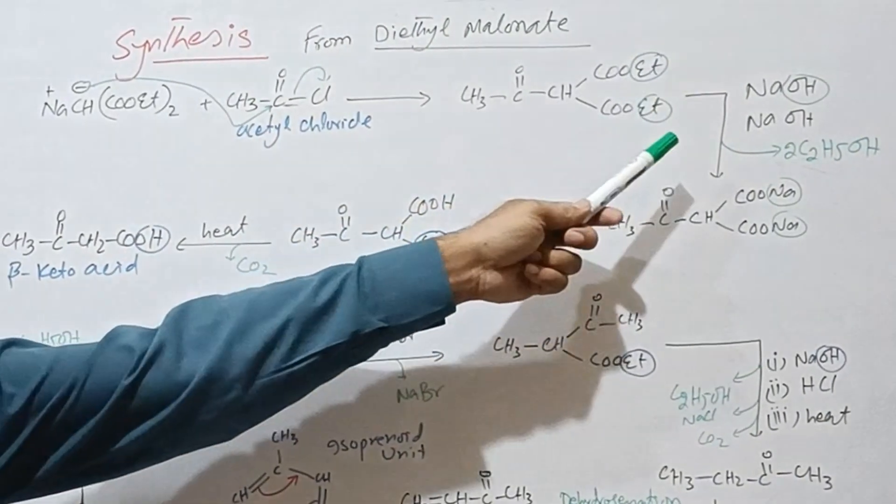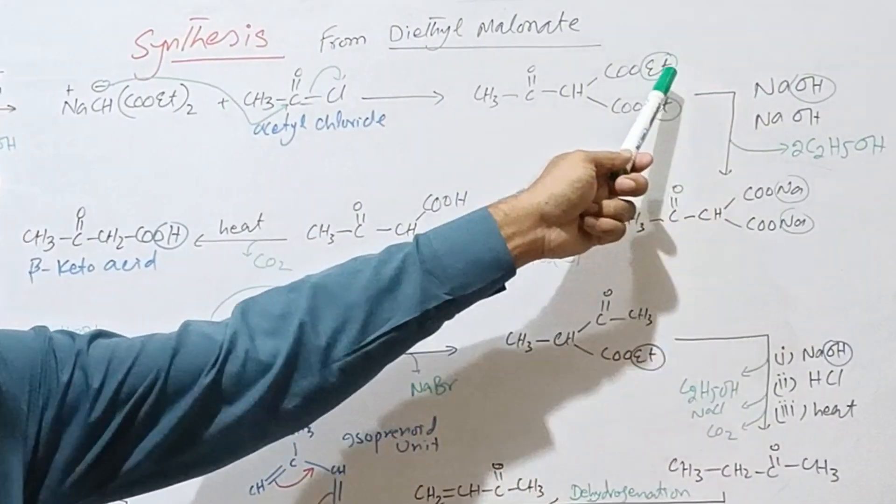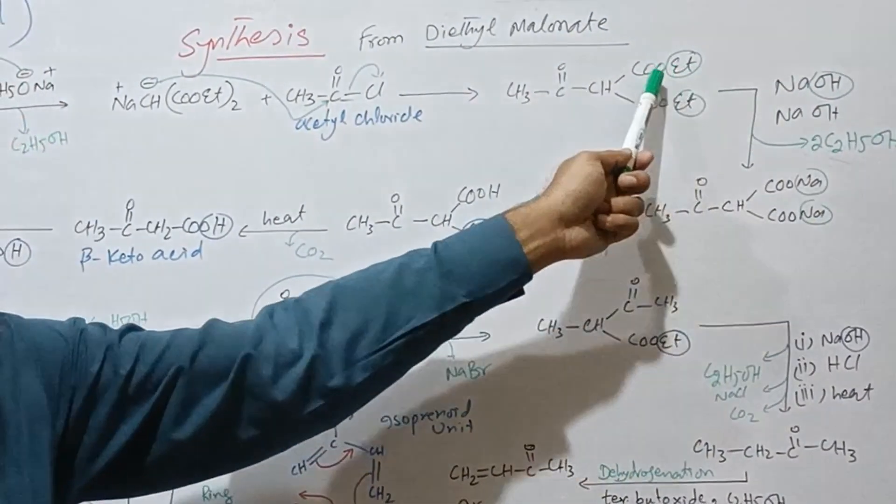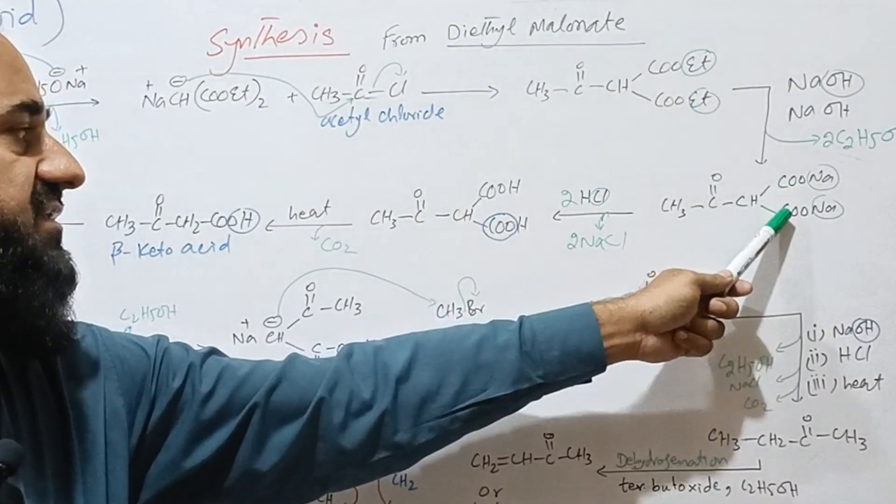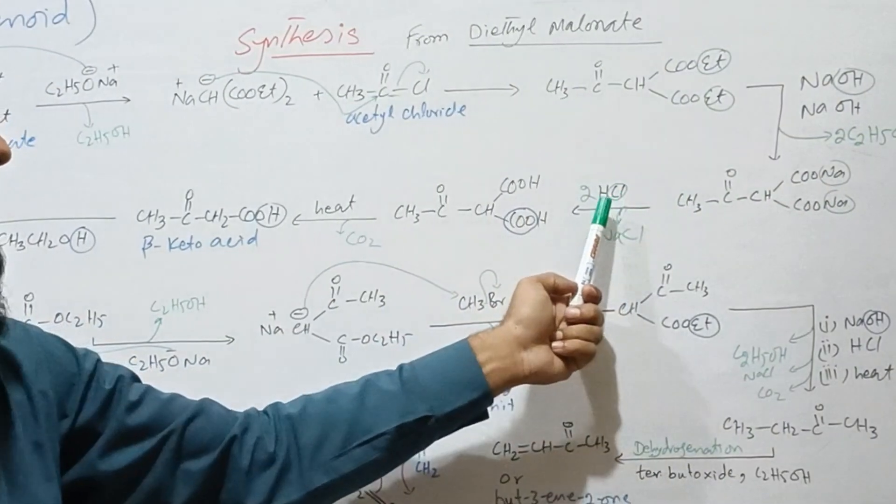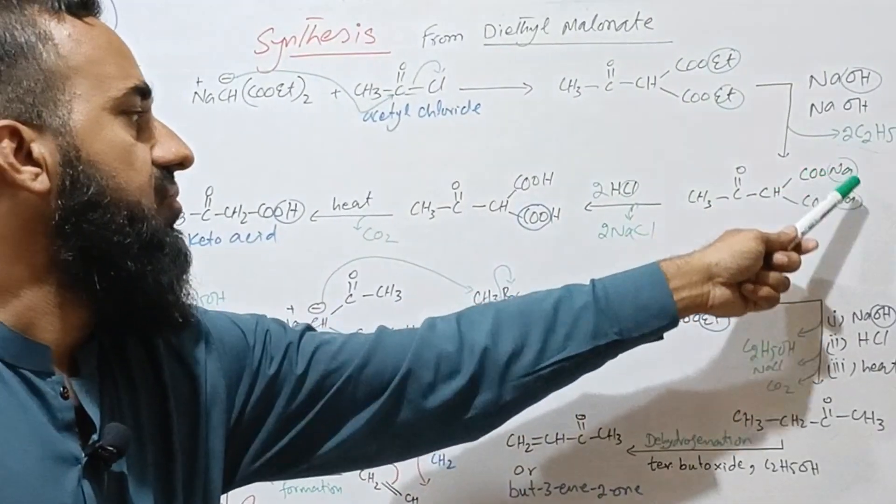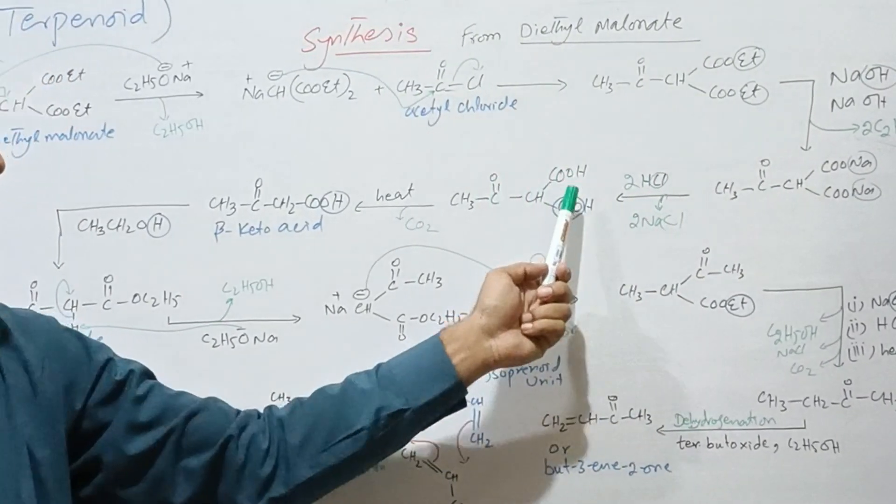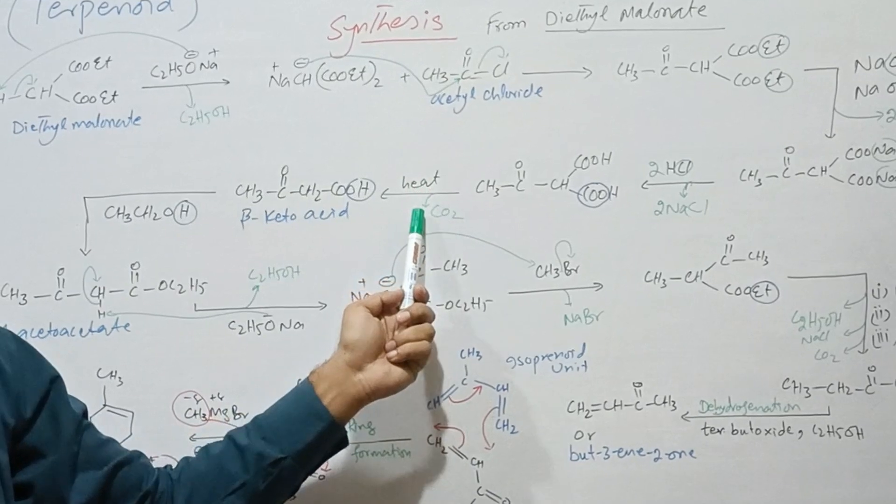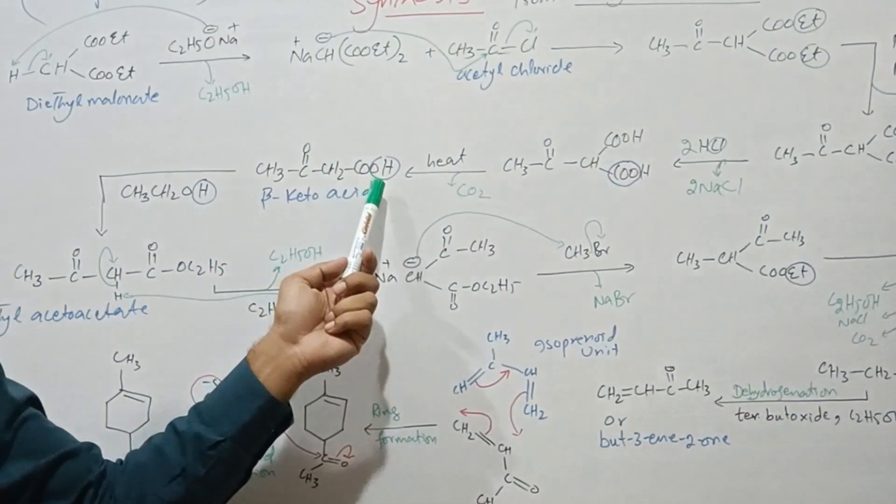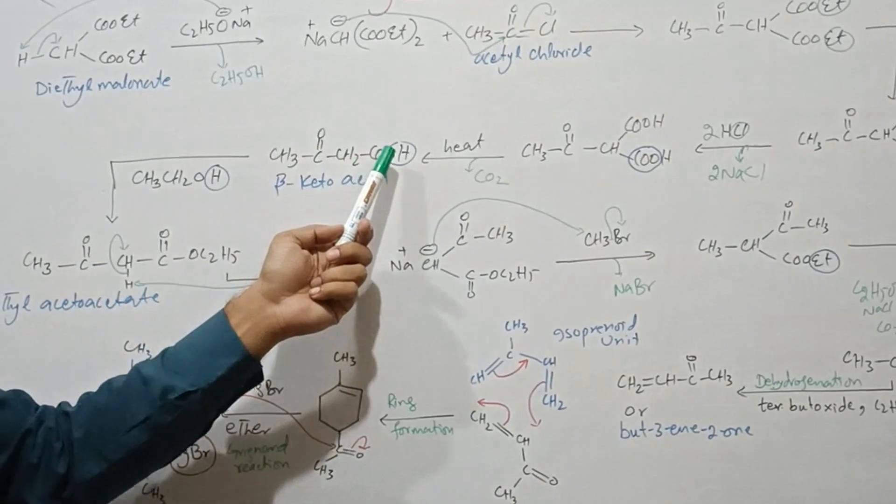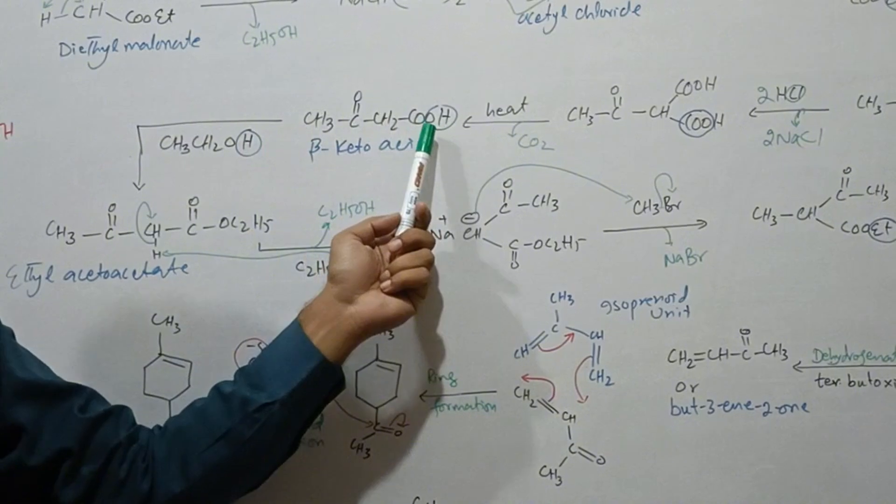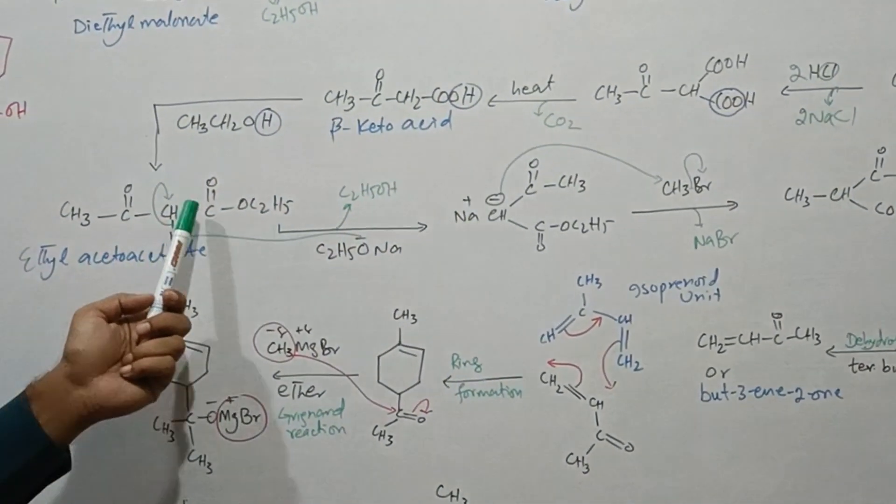This compound is treated with sodium hydroxide. Ethyl and hydroxide are removed as ethanol, and we get the sodium salt of dicarboxylic acid. This is further treated with HCl, where both sodiums are removed as NaCl, yielding keto-dicarboxylic acid. Upon heating, it decarboxylates to form beta-keto acid. This reacts with alcohol to form ester, yielding ethyl acetoacetate.